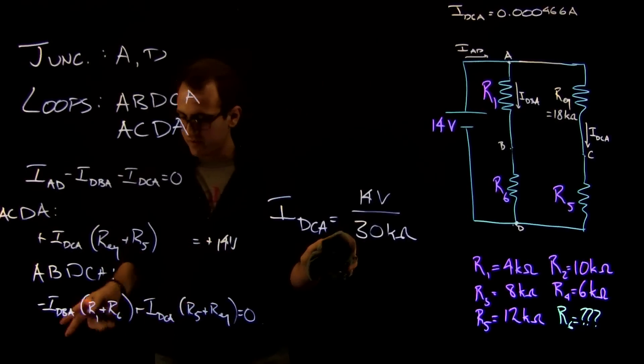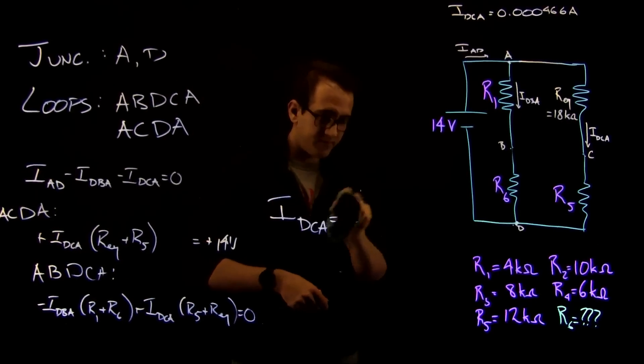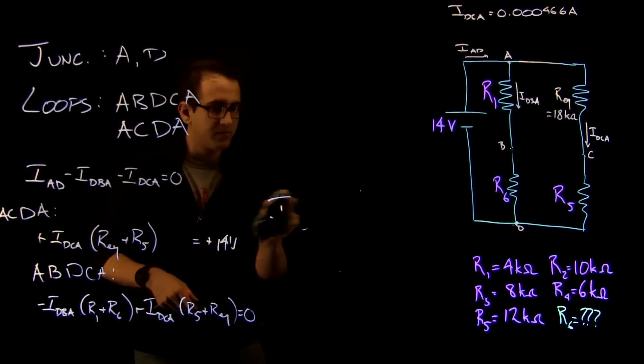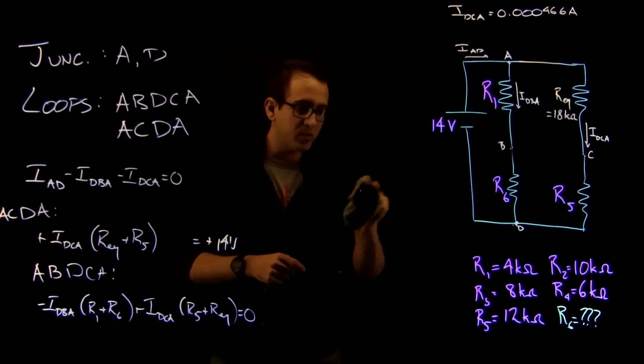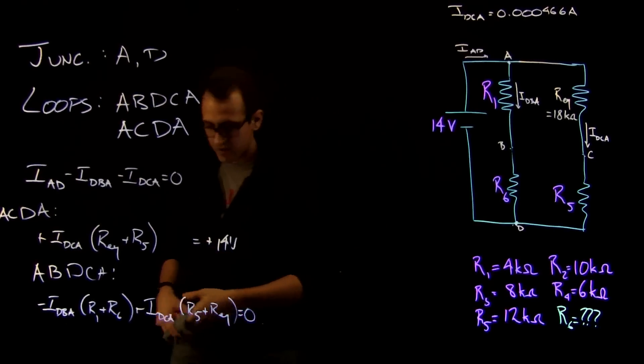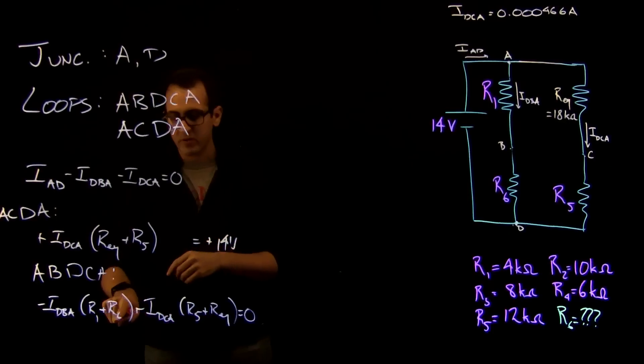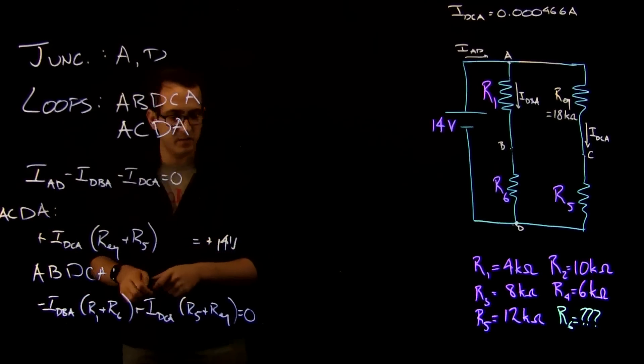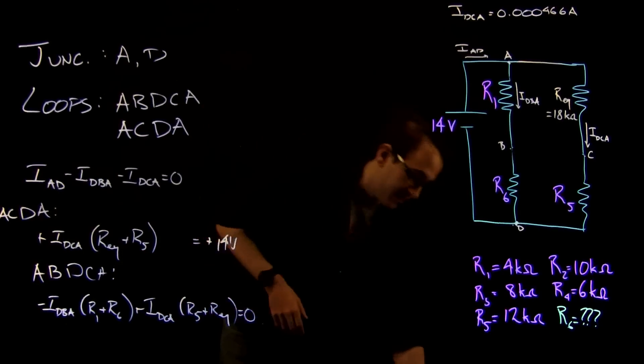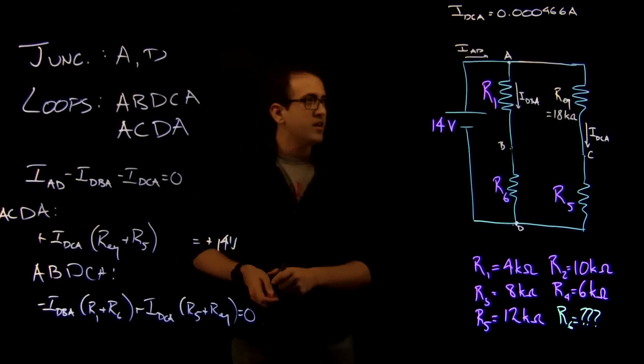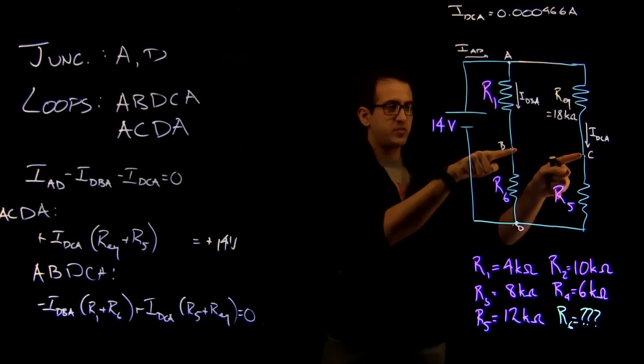Now what we want to do is we want to focus on our second loop equation. So the problem with our second loop equation is that we have two unknown quantities in it. While we know IDCA, we just found it, we don't know R6 and we don't know IDBA. But the first thing we can do is we can solve for IDBA.